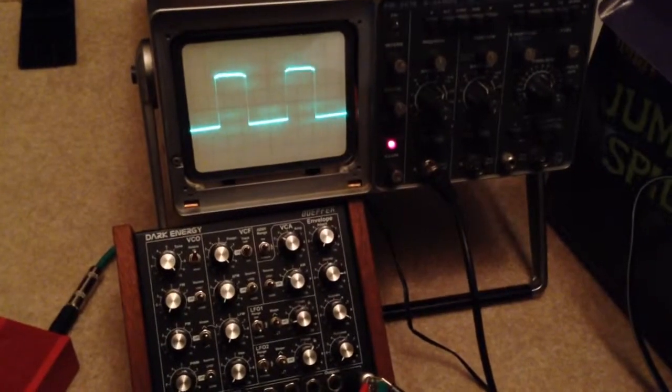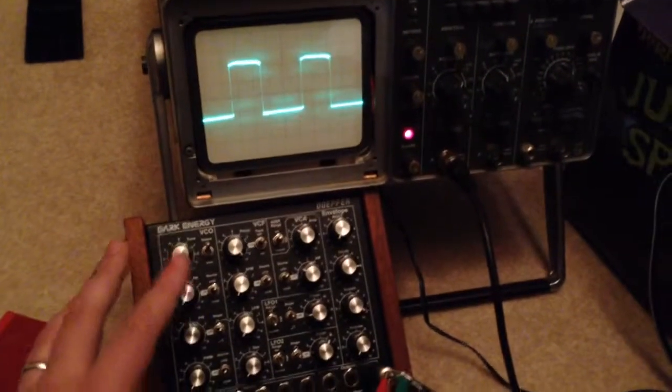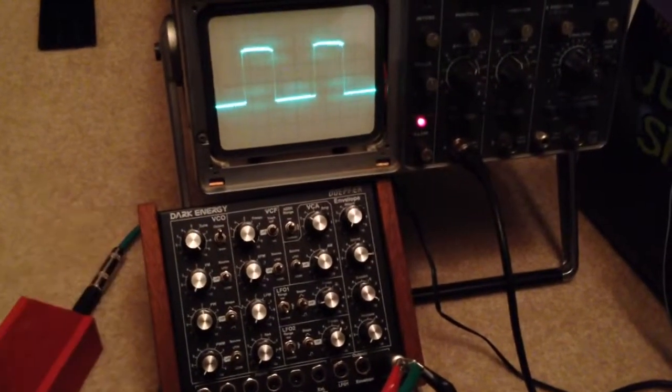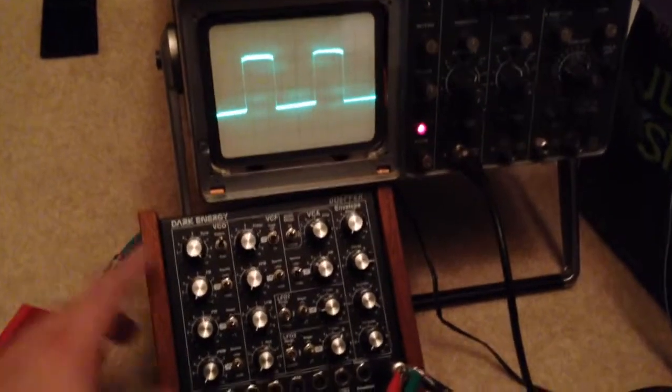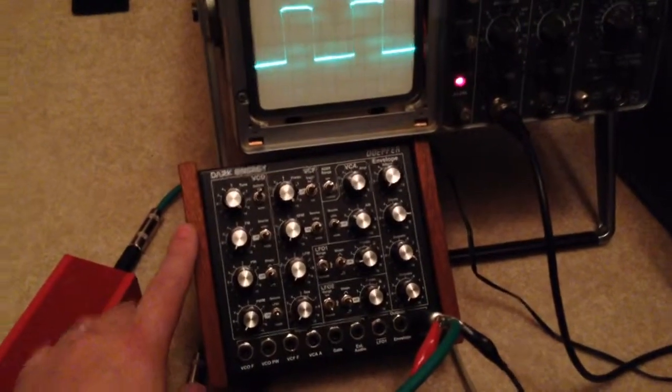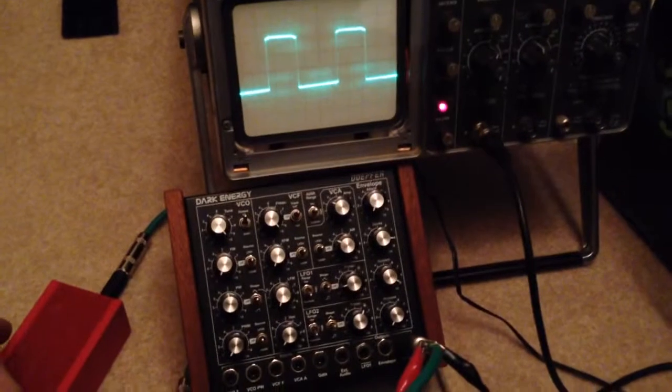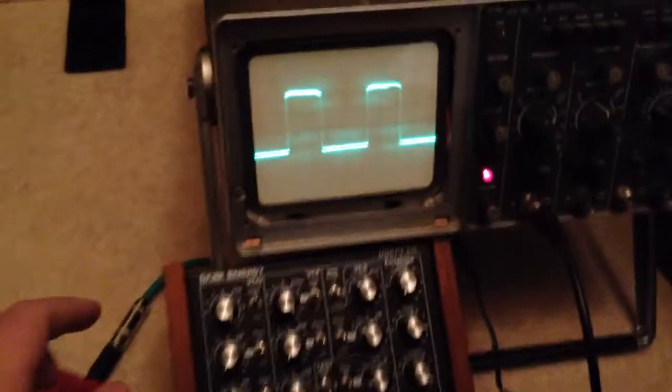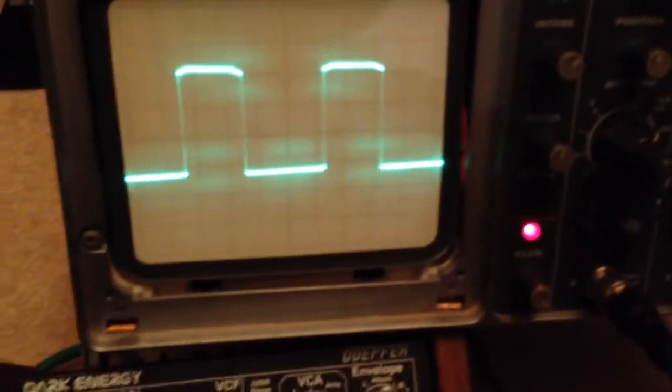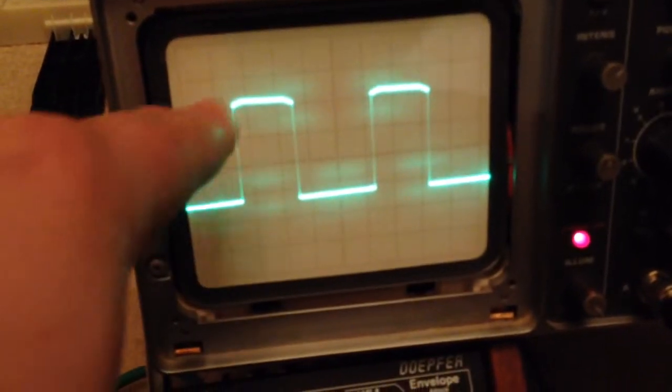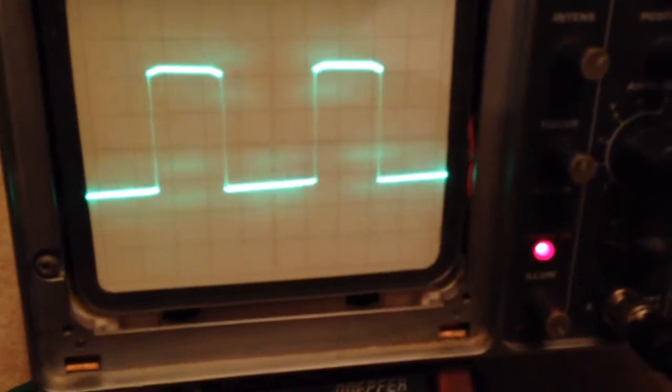Now, it's kind of interesting to note that because the Dark Energy Mark 1, the first series one, used a triangle core oscillator, you can see that the square wave has a really neat, you can see the remnants of a triangle wave and a square wave there. It's not exactly square, just a little bit of a ramp up and down here on the high side.